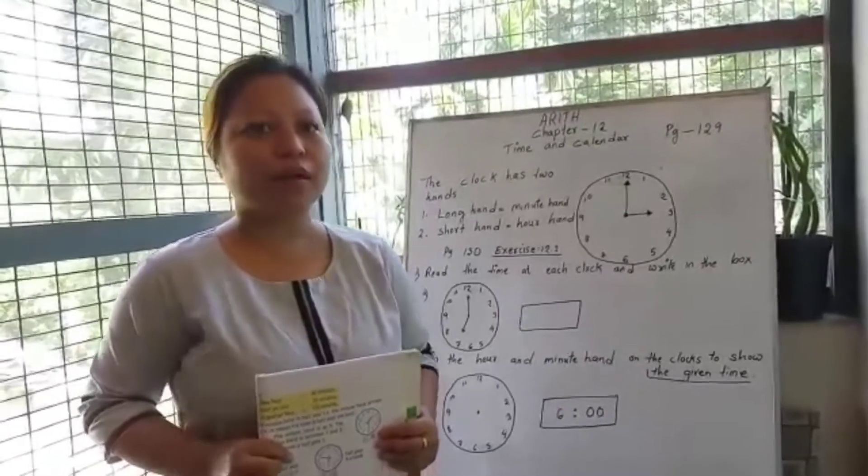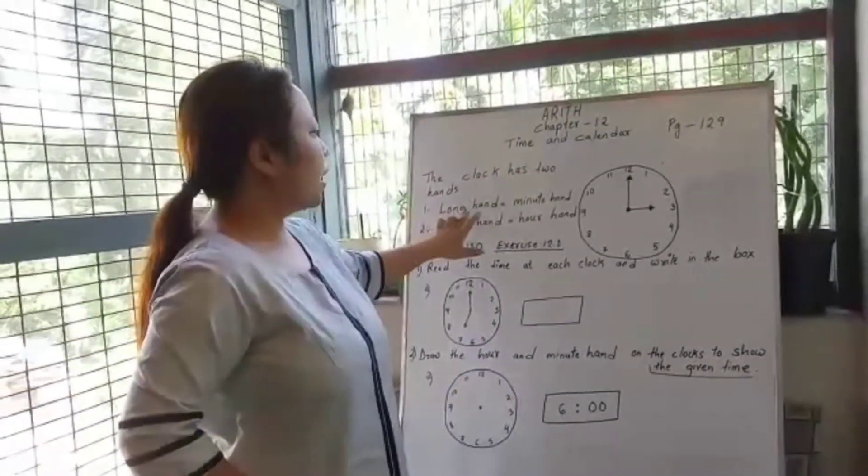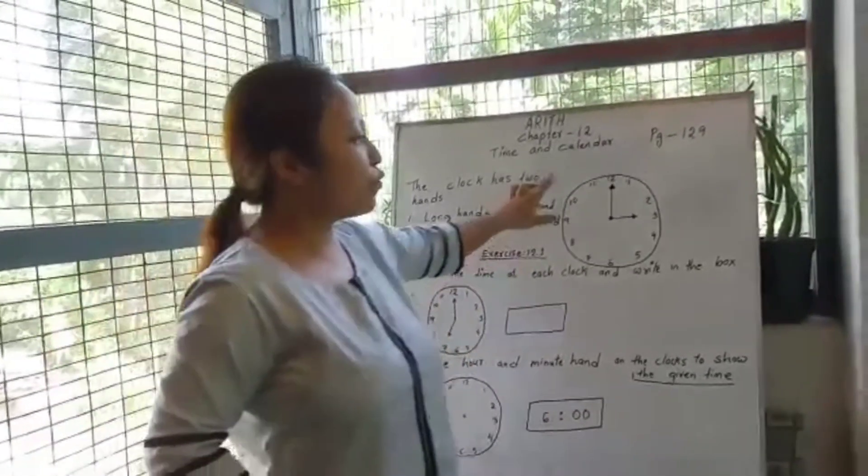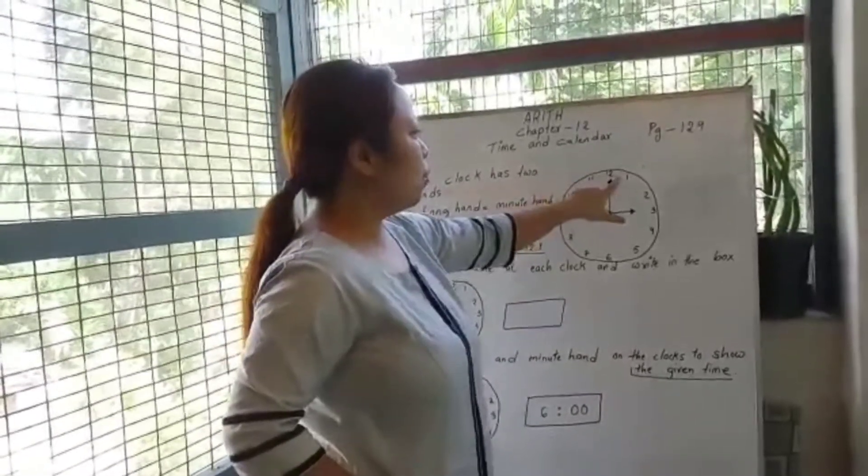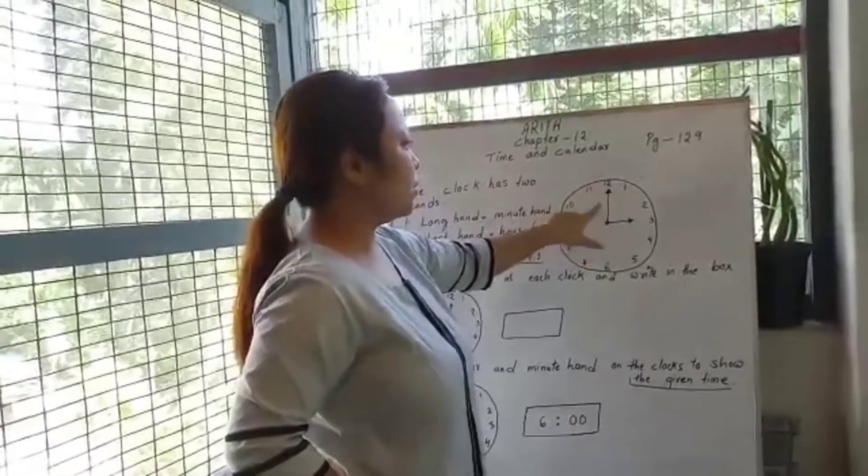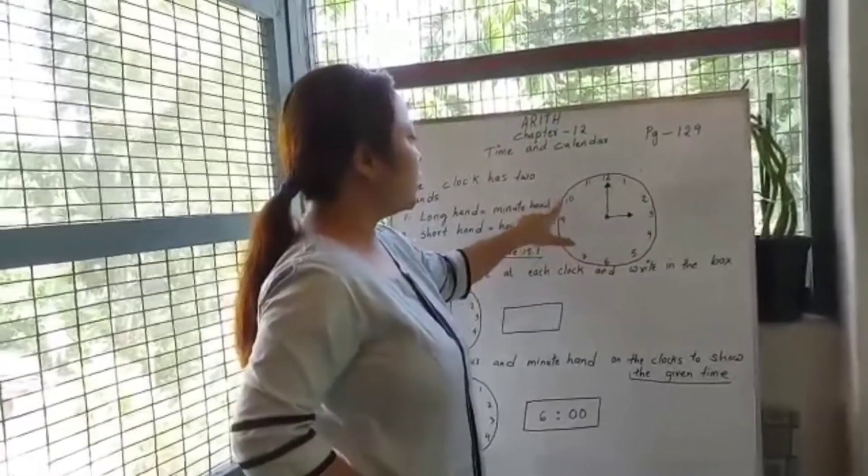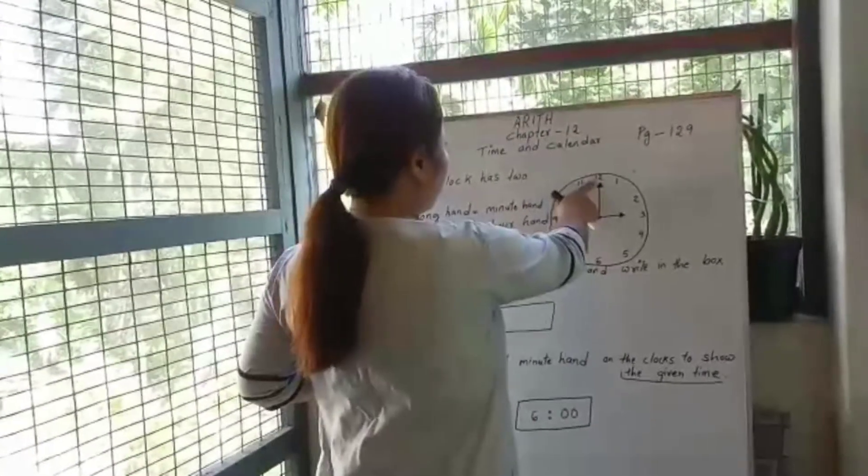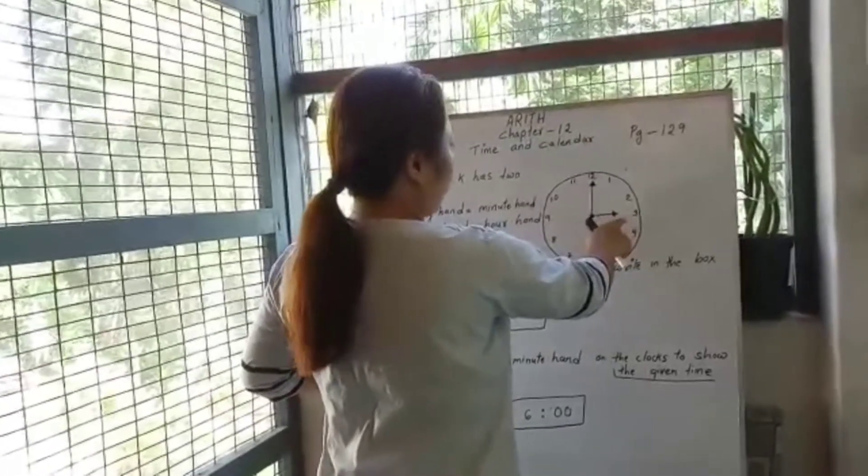The clock has two hands. The long hand is the minute hand and the short hand is the hour hand. Let us look at this clock. The numbers 12, 1, 2, 3, 4, 5, 6, 7, 8, 9, 10, 11 are given. The long hand is at 12 and the short hand is at 3.